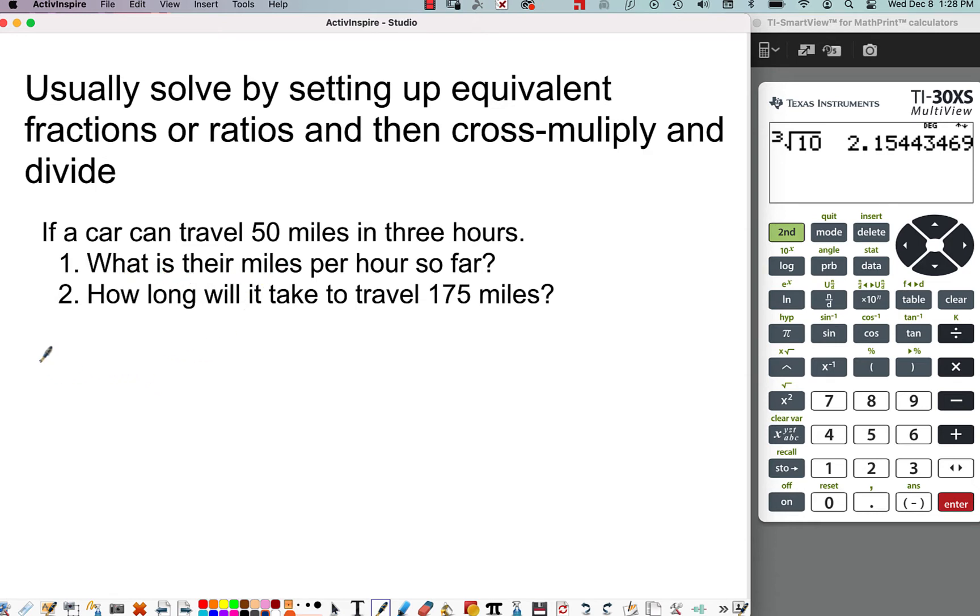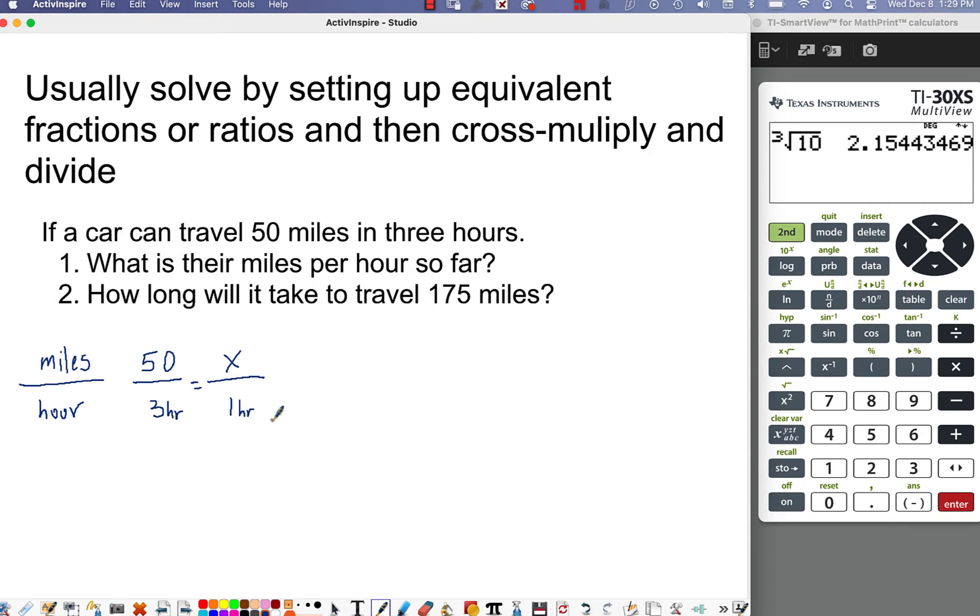So again, miles per hour is going to be miles on top per hour. And so we're doing, we have 50 miles in three hours. And so we want, here's our equivalent fraction, we want over one hour. So notice we have three hours and then one hour.